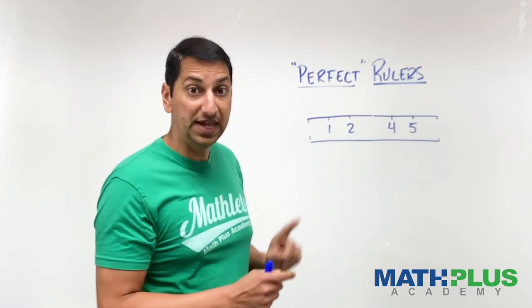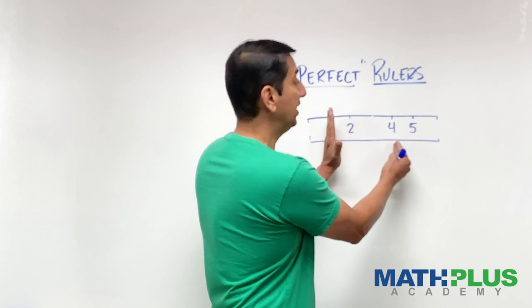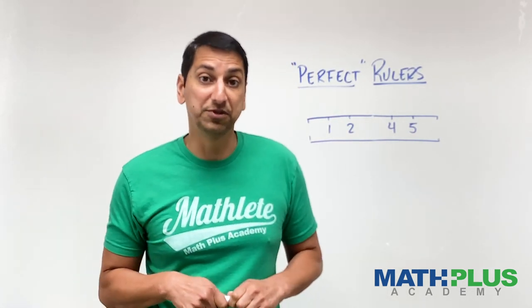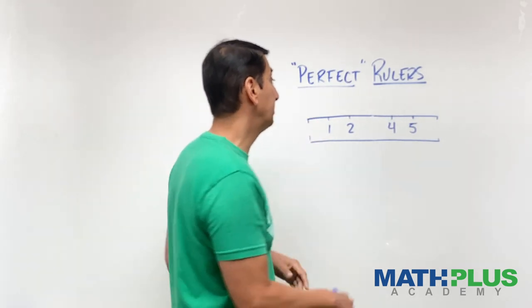Well, you could take that object, put it, line one end up at the one and the other at the four, and you could still measure three units on this ruler. So, so far, so good. I can still measure everything. Let me get rid of another one. Maybe I'll get rid of the five.